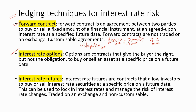Interest rate options are exactly like forward contracts, but not an obligation. Which means you have the option to exercise this agreement or let it lapse — you have the option not to exercise this agreement. Which is why these are called interest rate options: you have the option not to exercise.